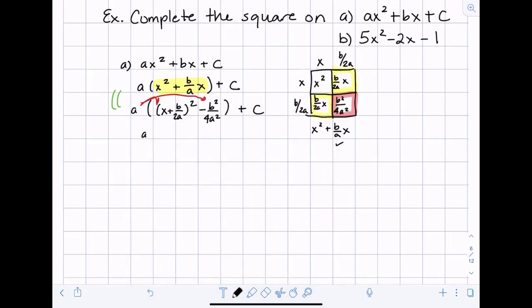So when I distribute the a I get a times x plus b over 2a squared minus b squared a over 4a squared plus c. Okay well I can simplify this fraction so that would be a times x plus b over 2a squared minus b squared over 4a plus c.